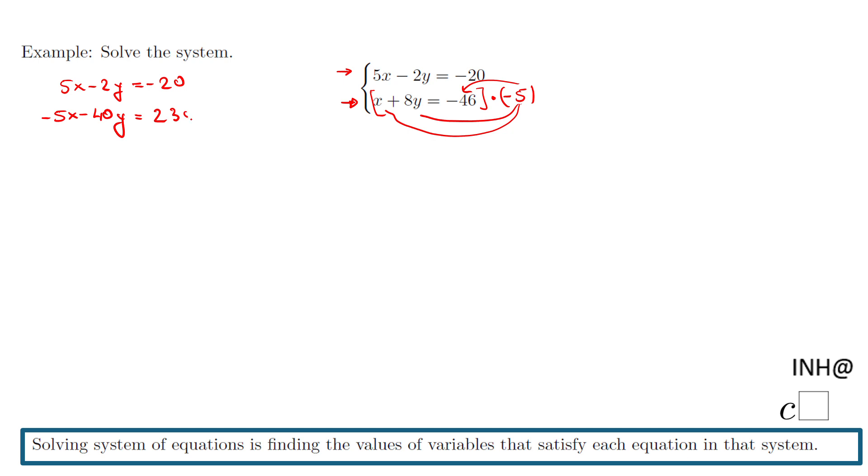And now you will see why I did what I did. Because now you notice 5x and negative 5x. These two guys cancel out if we add them. These two guys disappear. And then if we add these two guys, we have negative 42—I apologize—because we have negative 2 minus 40. So that will be negative 42y. And then if we add these two guys, what do we get? We get 210.